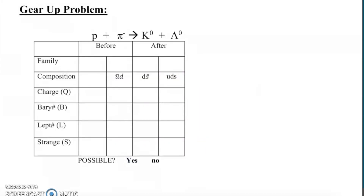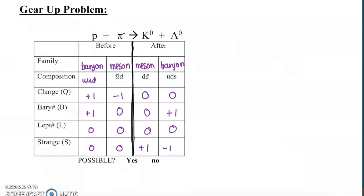To finish up, here's a gear-up problem: a proton and a negative pion turning into a neutral kaon and a neutral lambda — give this one a try. Checking the answer: this is a possible reaction. Charge is conserved, baryon number is conserved, lepton number is conserved, and even strangeness is conserved. Be patient with yourself — this takes time and practice to get used to these properties. A lot of this is new, so give yourself space to be a learner.